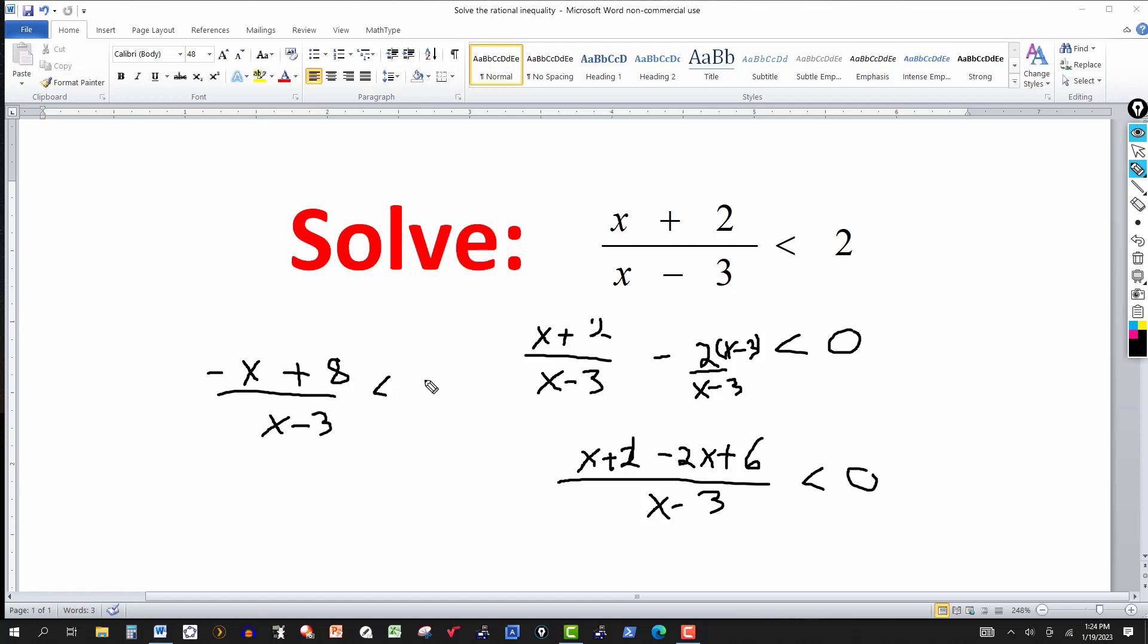So again, the procedure is to make one side zero. In this case, I added negative 2 to both sides, or we can say subtract 2 from both sides, and we've got this equation here. And then we multiply by x minus 3 here to get the same denominator, and then we simplify the numerator. Once you've simplified the left side, then what you do is find the zeros of the numerator and the zeros of the denominator.